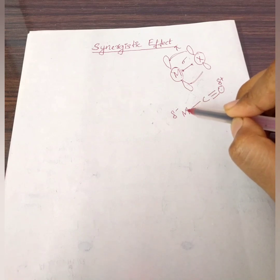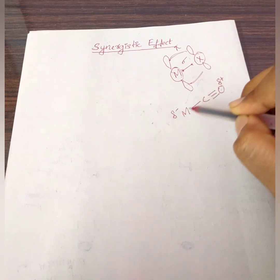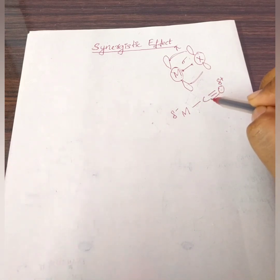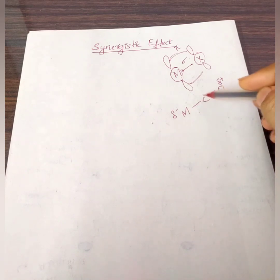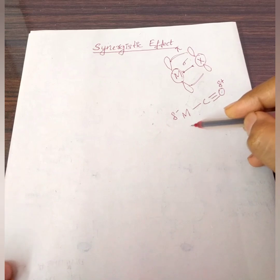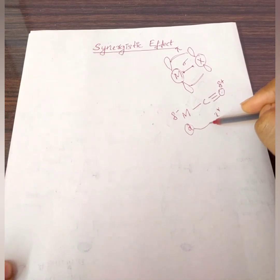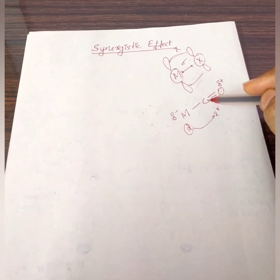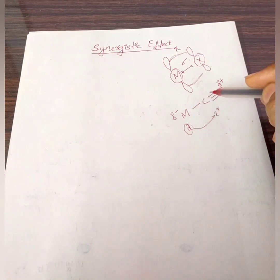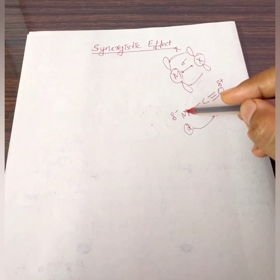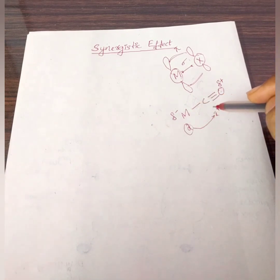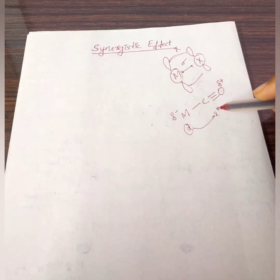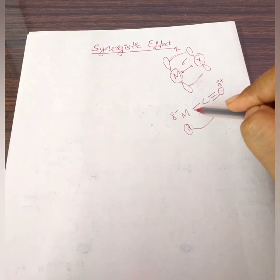The metal gives its electrons from its d-orbital to the pi-star orbital of the ligand. At the same time, the carbonyl is giving electrons from CO to the metal. So the carbonyl donates electrons to the metal, and the metal returns electrons from its d-orbital to the pi-star orbital of the ligand. This creates a cyclic flow of electrons.